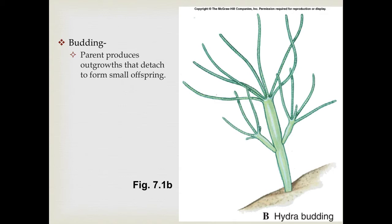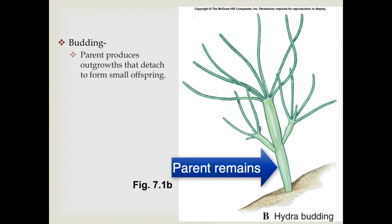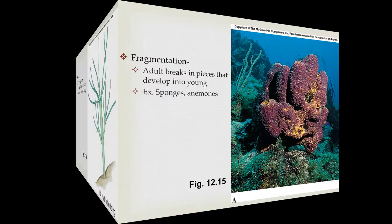Budding is very similar. The parent individual has little branches of itself that break off to form offspring individuals. This is a budding hydra, a type of cnidarian. It's similar to fission in that offspring are genetically identical to the parent, but now the parent typically remains as existing, producing much smaller but genetically identical offspring.